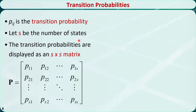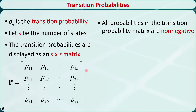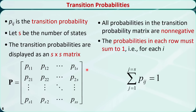With a total of s states, the transition probability from one state to another can be displayed as an s by s matrix. Since these elements are all probabilities, they should all be greater than or equal to 0 but less than or equal to 1. Also, the probabilities in each row must sum to 1 — meaning if the Markov chain is in state i at time t, it must transit to one of the s states at time t plus 1.